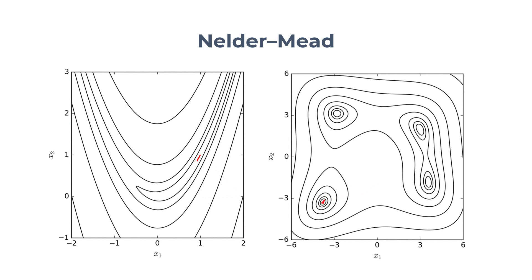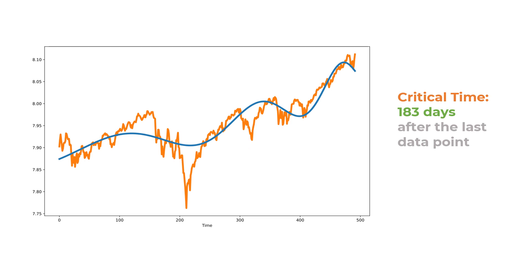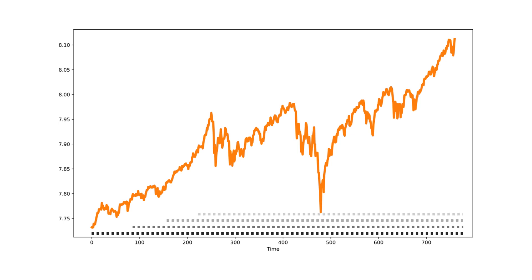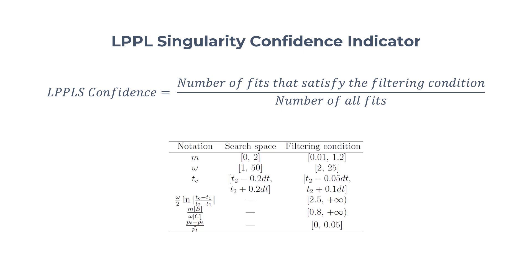Even after this reformulation, this function is still highly sensitive to input. For example, if you fit this function to the prices from the last 256 days rather than 512 days, we can get vastly different estimates of the critical time. Ideally, we would want our bubble indicator to be consistent over different timescales so that we can have some confidence in our predictions. We can do so by fitting LPPL curves over a range of window sizes and seeing how many of them warn us about an upcoming market crash. That's what the LPPL Singularity Confidence Indicator aims to do. It gives the fraction of the fits that satisfy a set of filtering conditions, and if a fit has parameters that fall between those ranges, it's considered a valid fit for a bubble.